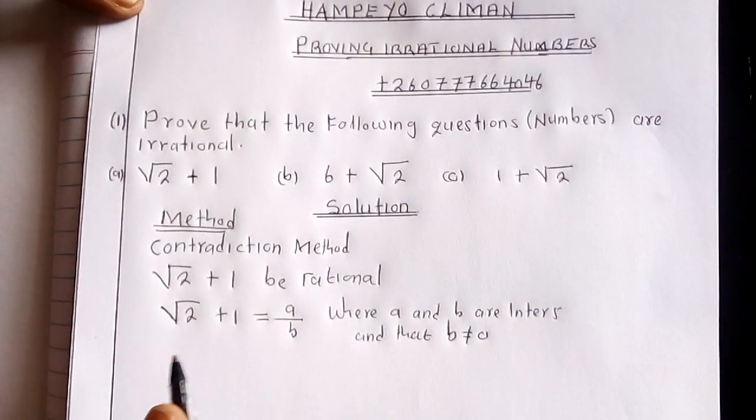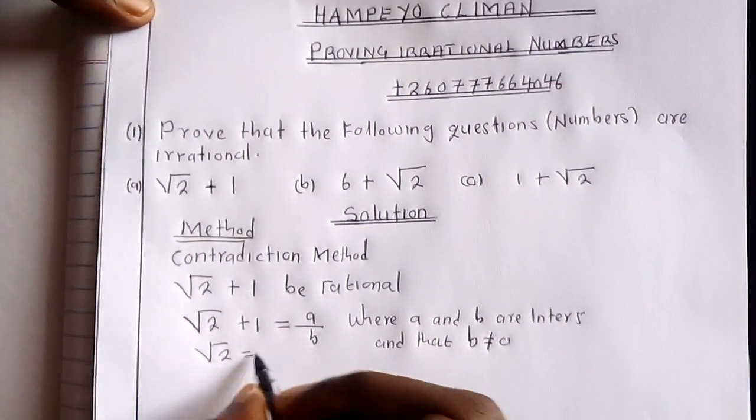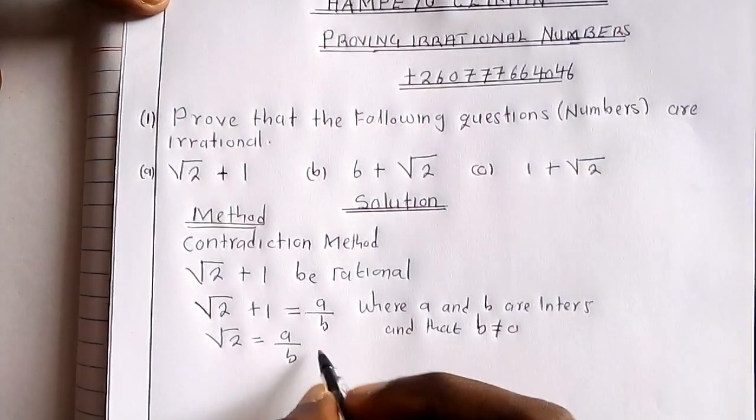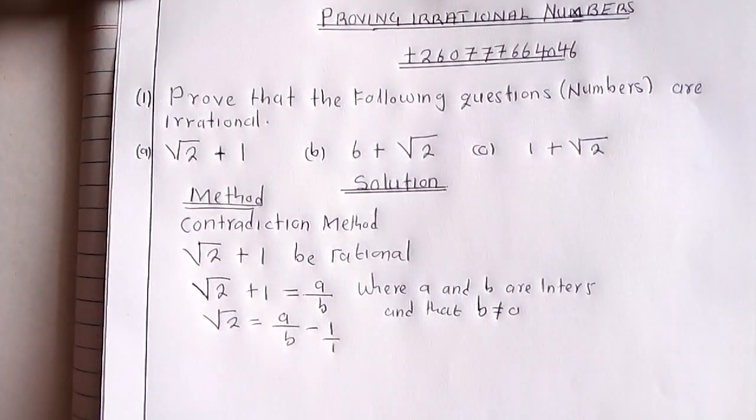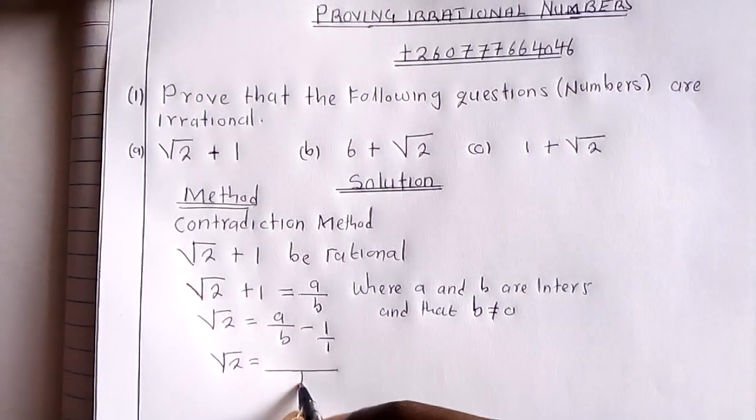So we can make square root of 2 the subject. This is going to be A over B minus 1. Square root of 2 is going to equal...